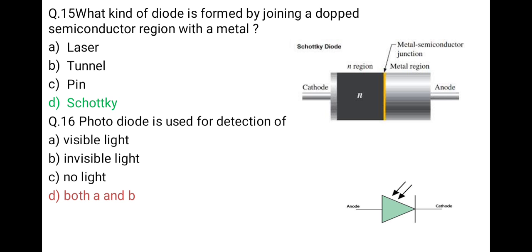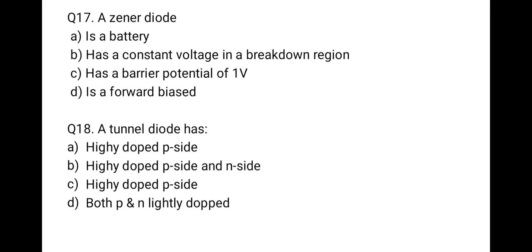The next question: a Zener diode — first is a battery, second has a constant voltage in a breakdown region, third has a barrier potential of one volt, last is a forward bias. The correct option is B: it has a constant voltage in the breakdown region.